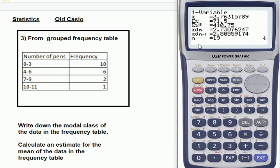And you can see n is 19, so the number of bits of data is 19. That should correspond to the sum of all the frequencies. So, 10 plus 6 plus 2 plus 1 is 19, so that is a very good check.